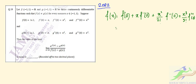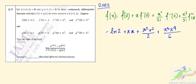We substitute the given values. So f(0) is ln 2, f'(0) is π, f''(0) is π², and f'''(0) is π⁹. So f(x) becomes: ln 2 + πx + (π²x²)/2 + (π⁹x³)/6.